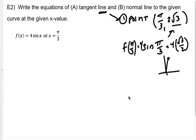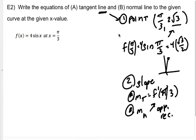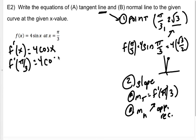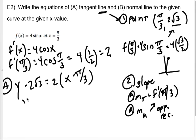If you don't remember the unit circle, go study it because it's fair game. The second thing I need is a slope. My tangent slope is going to be f prime at pi over 3, and my normal slope is whatever the opposite reciprocal of that is. So let's find f prime of x — that's 4 times the derivative of sine, which is cosine. So f prime of pi over 3 is 4 cosine of pi over 3, which is 4 times 1 half, or 2. So my answer to A is y minus 2 root 3 equals 2 times the quantity x minus pi over 3, giving y equals 2(x minus pi over 3) plus 2 root 3.